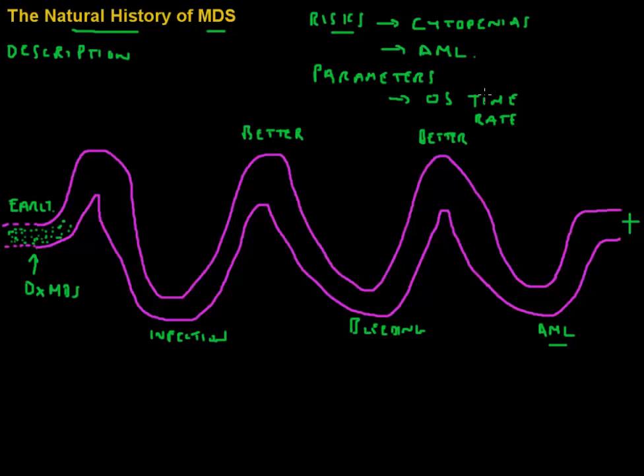Another important endpoint to consider is progression-free survival. So if we think about progression in MDS, we can think about progression to AML, acute myeloid leukemia, or we can think of progression to complete bone marrow failure. And this could be another way to express the course of the disease.